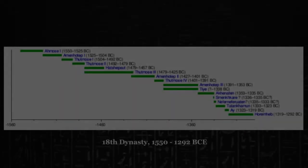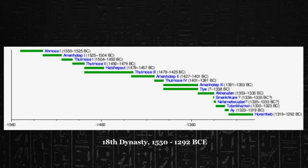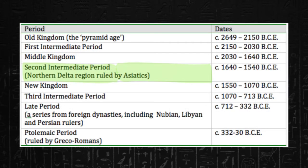It's easy to imagine that the history of ancient Egypt is like one straight line with a beginning, a middle, and an end. But in reality, the region was composed of dozens of different dynasties, many overlapping and coexisting with one another. To make studying this history a bit easier, 19th century Egyptologists worked to divide the chronology of ancient Egypt into periods.